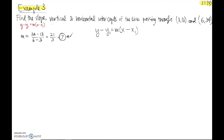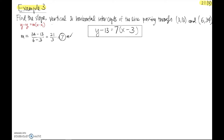With point-slope form, I put in slope = 7, and for x₁ and y₁ I'll use the point (3, 13). So: y − 13 = 7(x − 3). That's the equation for this line. Now I need to answer all the questions asked. The slope is 7. Next, they ask for the vertical intercept, which is the point on the line that crosses the vertical axis — this happens when x = 0.